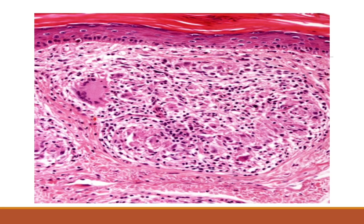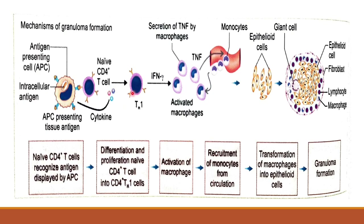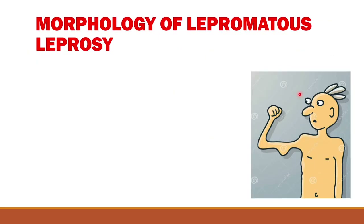The granuloma in tuberculoid leprosy consists of epithelioid cells, giant cells, lymphocytes, and a rim of fibrosis. Th1 cells secrete interferon gamma, which activates macrophages; activated macrophages elongate into epithelioid cells, and if they fuse together they form giant cells. This is the typical granuloma diagram that students may be asked to draw in exams — showing fibroblasts, lymphocytes, activated macrophages (epithelioid cells), and giant cells.